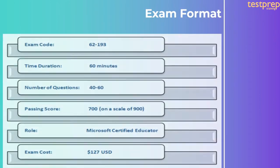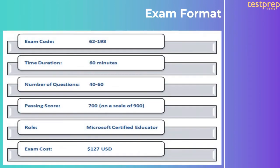Exam format: the Technology Literacy for Educators 62-193 exam includes 40 to 60 questions that can be of types such as case study, short answers, multiple choice, mark review, drag and drop, etc. For completing this exam you will be given a time duration of 60 minutes.